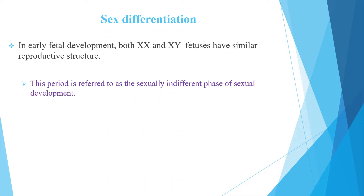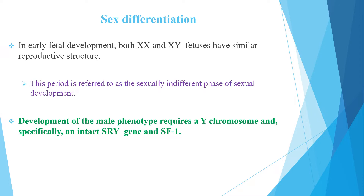When we look at the steps of sex differentiation, in early fetal development, both XX and XY fetuses have similar reproductive structures, and this period is referred to as the sexually indifferent phase of sexual development. Development of the male phenotype requires a Y chromosome, and specifically an intact sex-determining region on the Y chromosome (SRY) and steroidogenic factor 1.